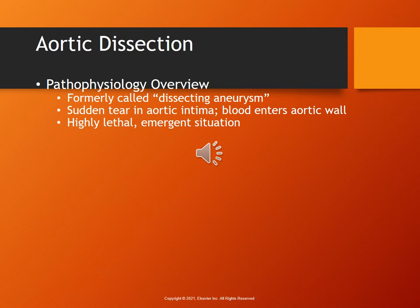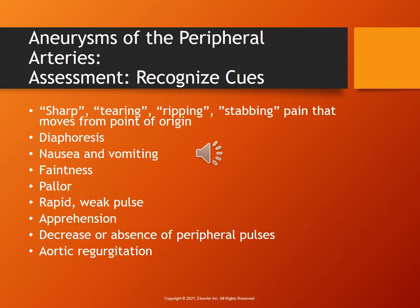Aortic dissection is a medical emergency in which the inner layer of the aorta tears. It's most common in men in their 60s and 70s. Symptoms include sudden severe chest or upper back pain that radiates to the neck and down the back, loss of consciousness, and shortness of breath. Treatment includes surgery and medications such as beta blockers. This is a highly lethal emergency situation. Your assessment will show sharp, tearing, ripping, or stabbing pain that moves from the point of origin. The patient is usually diaphoretic, faint, nauseated, has a weak pulse, is very apprehensive and anxious, has decreased peripheral pulses, and aortic regurgitation may be heard.